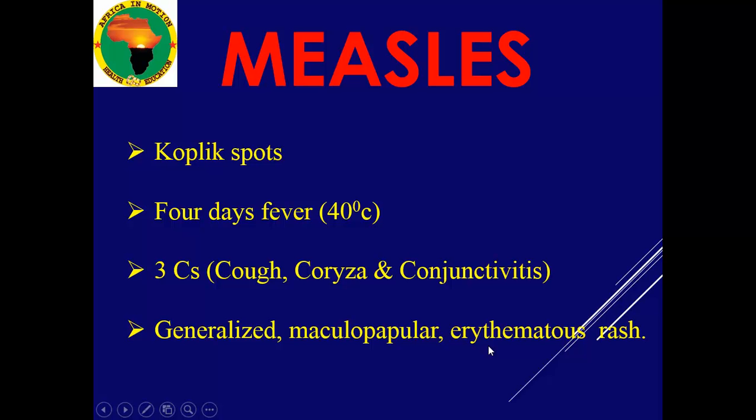The Koplik spots are one of the important signs not to miss when diagnosing measles — they are spots found inside the mouth. The other key sign is the fever, which is around 40°C — this is very high and can cause damage to the brain.